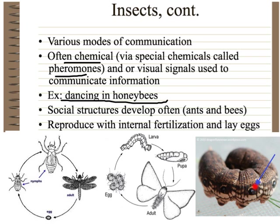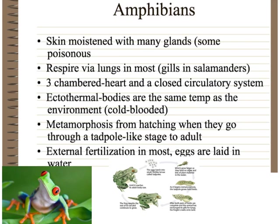Here's a picture of an insect larva with those little holes called spiracles, which lead to the tracheal tubes.